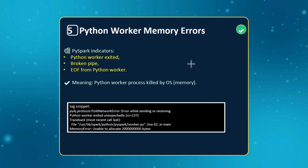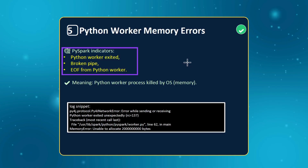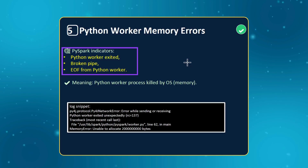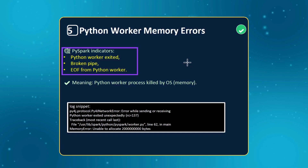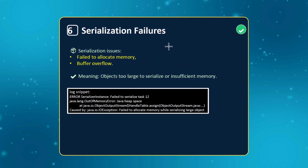The next thing is Python worker memory errors. If you see something like 'Python worker exited', 'broken pipe', or 'end of file from Python worker', this means your Python worker process was killed by the OS, YARN, or containers because it did not have sufficient memory. Sometimes you would observe that your program exited without any proper reason, or with an abnormal exception — that is also possibly related to out of memory error.